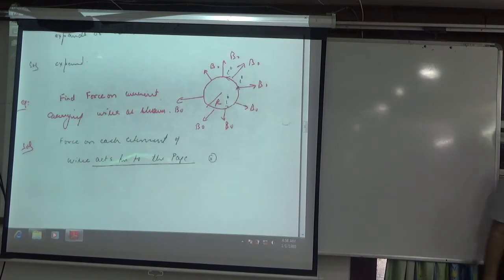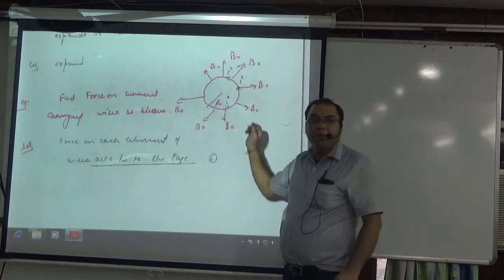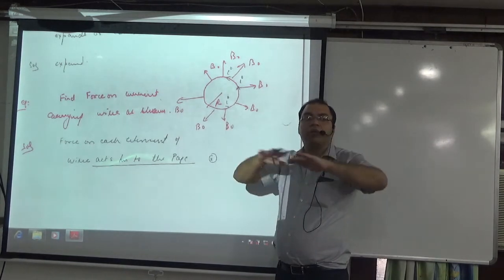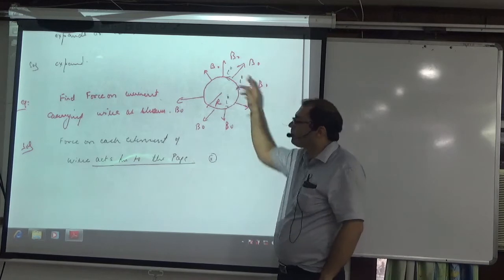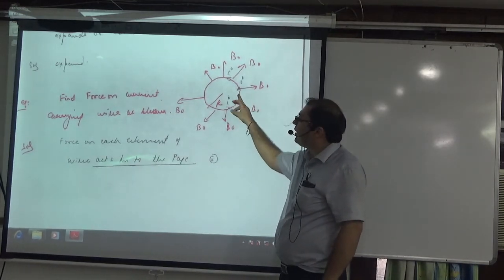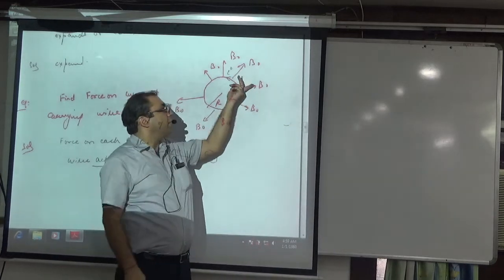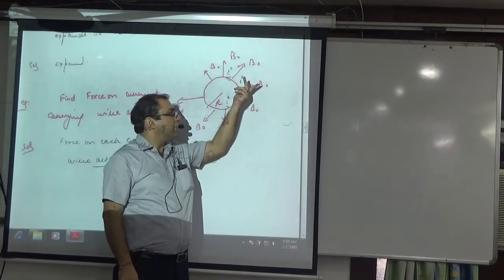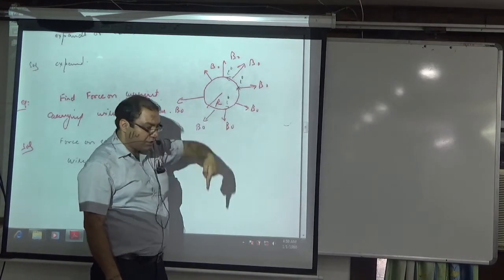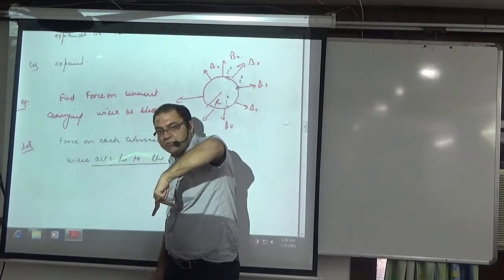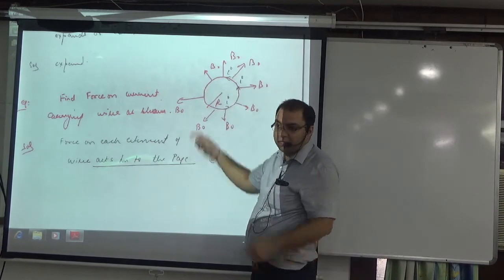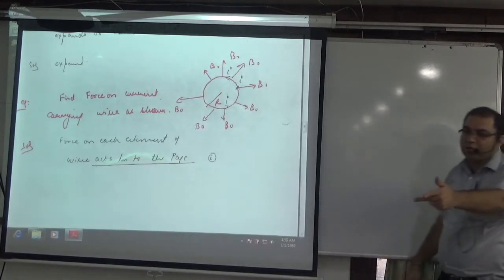Next: if you have a current carrying loop and B is radially outward — not into or out of the board, but radially outward — you have to tell where the force will be. Take this first element: B is outward on this side, current is in this direction, so the force is inside. Take another element: B is down, current is in this direction, force is inside. So wherever you put the element, the force is always inward.